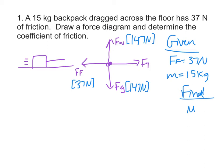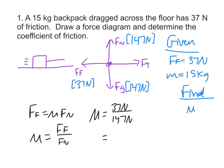And the only thing left now to find is the coefficient of friction. So frictional force equals mu Fn. Mu equals frictional force over normal force. So mu equals 37 newtons divided by 147 newtons. 37 divided by 147 is 0.2517 keeps on going.